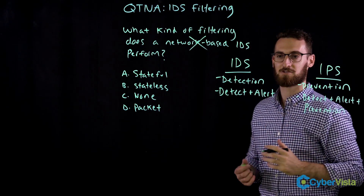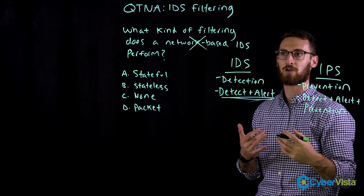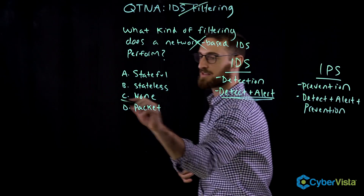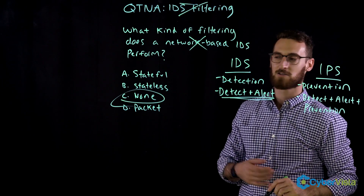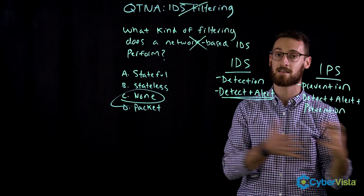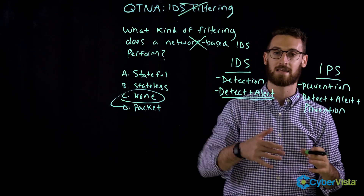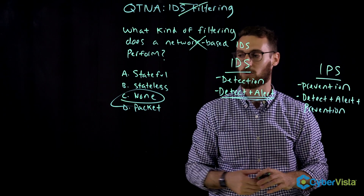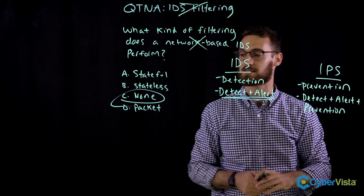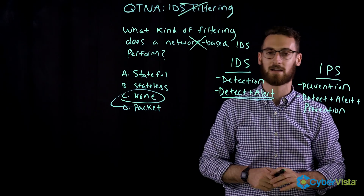If you think about it, that's the answer to the question right there. If an IDS only detects and alerts, it doesn't actually stop or filter traffic — so IDS doesn't perform a type of filtering. This is actually an oxymoron, so we immediately jump to the right answer, which is C: none. If you had read that question and jumped ahead too quickly, you'd probably pick packet — because the IDS does inspect packets, that's true — and based on its functionality, it can be either stateful or stateless. A more intelligent form would be stateful, while a more basic form dependent on an ACL would be stateless. But because the question asks about filtering, the right answer is C, none.